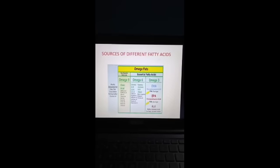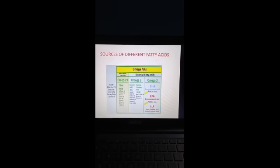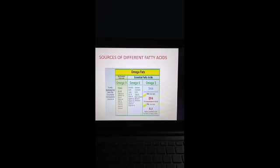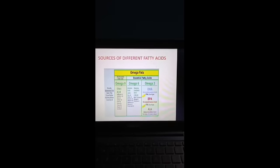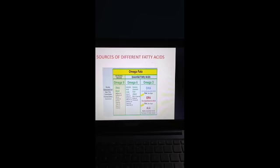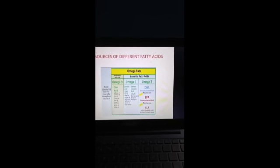Coming to sources of different fatty acids. Omega-9, a non-essential fatty acid — oleic acid — is available from sunflower oil, etc. Omega-6 fatty acid, linoleic acid, is an essential fatty acid found in cotton oil, corn oil, soybean oil, sesame oil, etc. Gamma-linolenic acid (GLA) is present in black currant oil and evening primrose oil, etc.